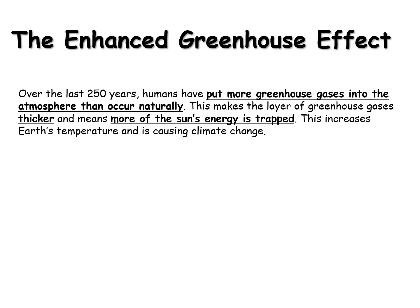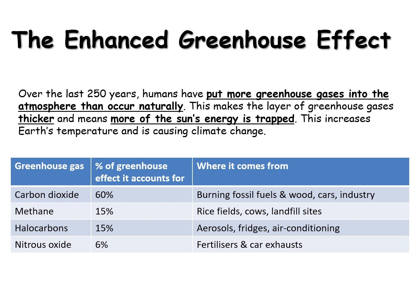Over the last 250 years, humans have put more greenhouse gases into the air around us than occur naturally. This makes the layer of greenhouse gases thicker and means more of the sun's energy is trapped, increasing the Earth's temperature, causing climate change. And this is why the Earth is getting warmer.